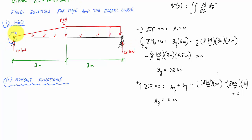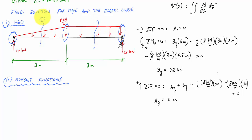At the left support there's a concentrated force and a beginning of a distributed load. In the middle there's the end of the linearly distributed load and the beginning of the uniformly distributed load. At the right there's the end of the uniformly distributed load and a concentrated force of 22 kilonewtons. With three discontinuities, I make two cuts — cut one and cut two.